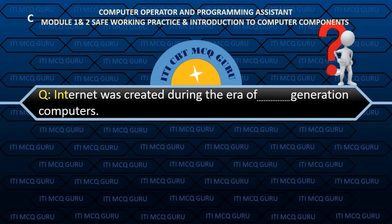Internet was created during the era of — Answer: B. Fourth generation computers.